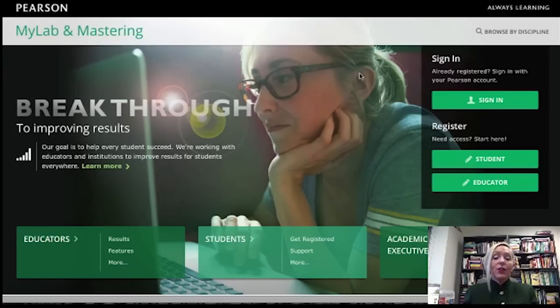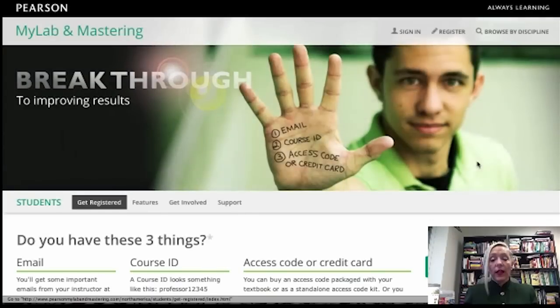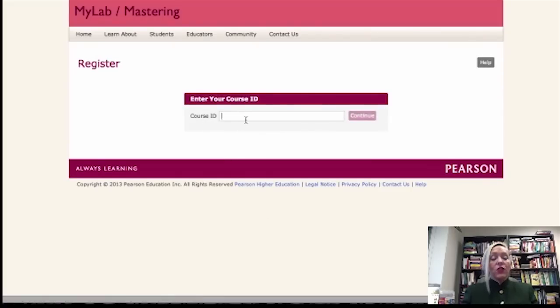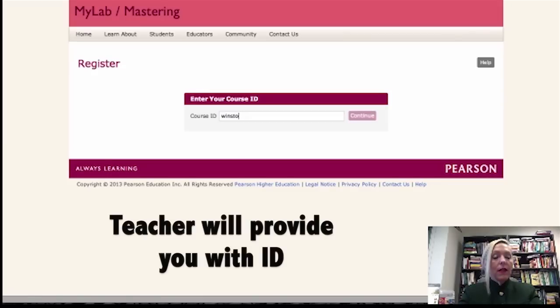Now, the next thing you need to do is you need to go to register. No matter who you are, you're going to have to register as a student in this class. So, we click students, and it says you need to have an email address, you need to have a course ID, and you need to have an access code or a credit card. So, now, course ID. My course is Winston 71615. And we're going to continue.